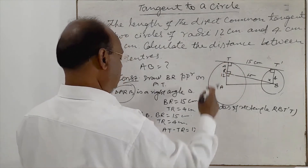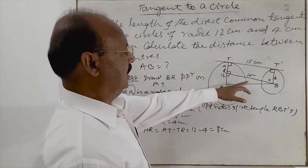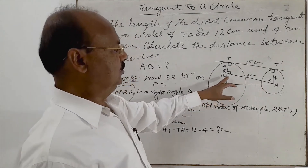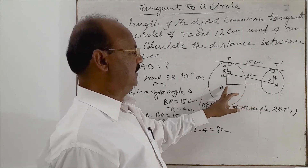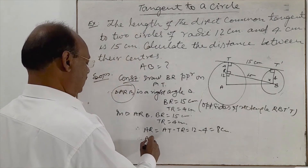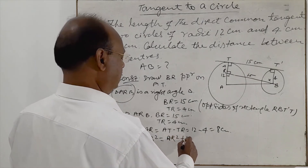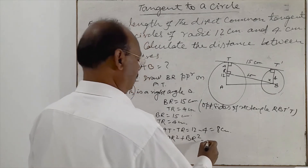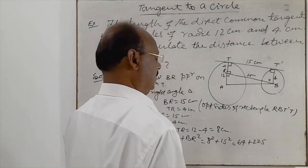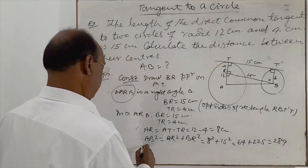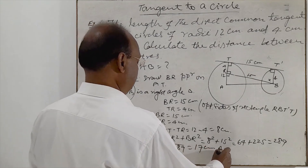So in this right angle triangle ARB we have two sides: BR is 15 centimeter and AR is 8 centimeter. By the Pythagoras theorem we can find the length AB. Therefore AB squared equals AR squared plus BR squared, which equals 8 squared plus 15 squared, equal to 64 plus 225, equal to 289. Therefore AB equals the square root of 289, which equals 17 centimeter. This is the answer.